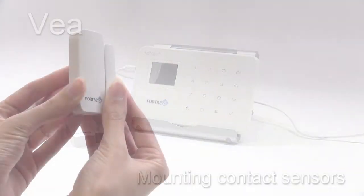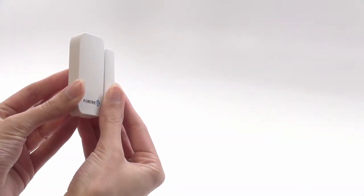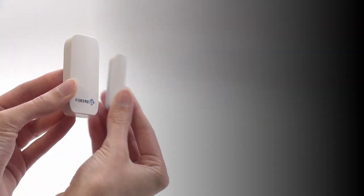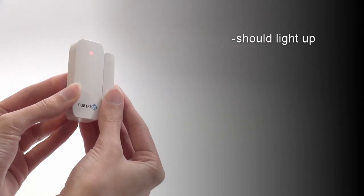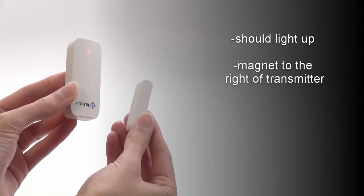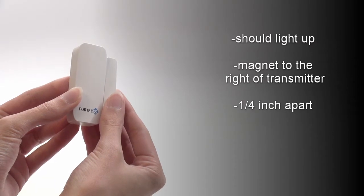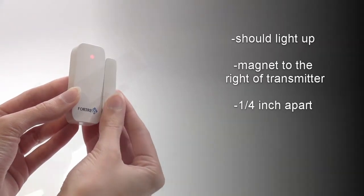On the top of the sensor is a small red light. If the unit has batteries, this light should come on every time the two halves of the contact are separated. The small piece should be to the right of the large piece and no more than one-fourth of an inch away when the sensor is closed.